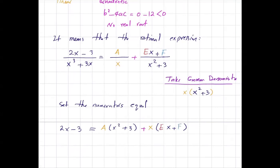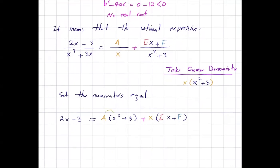Let's distribute A into the parentheses and distribute x into the parentheses, then set these equal to each other. On the left-hand side we have 2x minus 3. On the right-hand side, distributing gives A times x squared plus 3A plus Ex squared plus Fx.